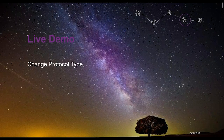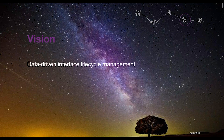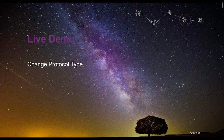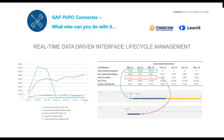That was the live demo of how we actually change the protocol type and push this transformation — or change — to LinaX. So what is the additional vision? That's not the final version of our connector; we want to keep working on it and extend the functionality. The next vision we have is to actually do data-driven interface lifecycle management. How this could look: within SAP, we also have the monitoring data, the logging functionalities. So we know when an interface is going to be executed, a log file is created with information of the interface — for example, the messages that have been sent via this interface.